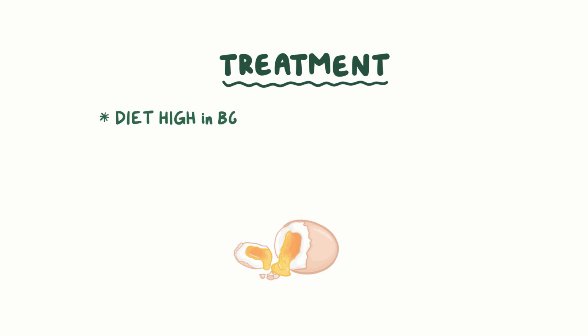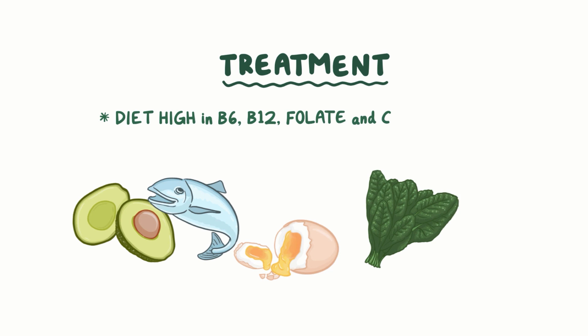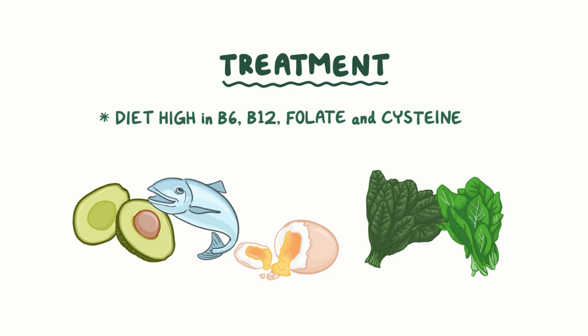The main treatment for homocysteinuria is a diet high in vitamin B6, B12, folate, and cysteine, and betaine if needed, which will all help decrease homocysteine levels and reduce the risk of strokes.